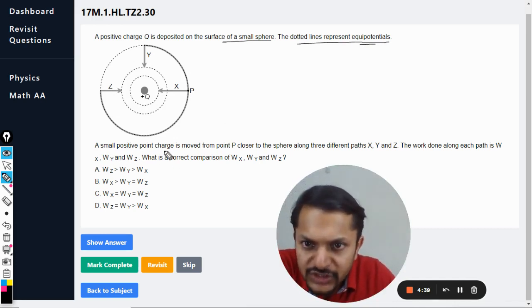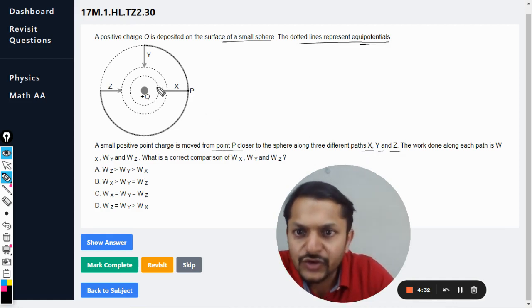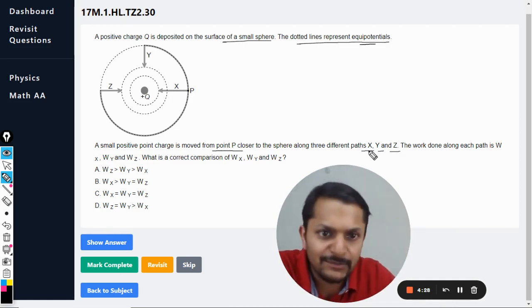A small positive point charge is moved from point P closer to the sphere along three different paths X, Y, and Z. These are the three different paths in which the charge is moved, and it is the same charge.